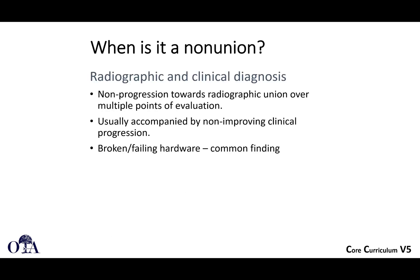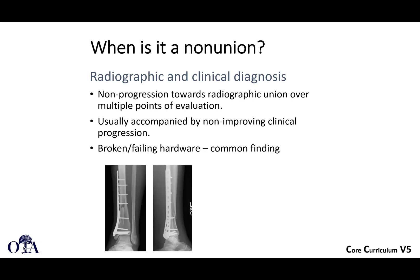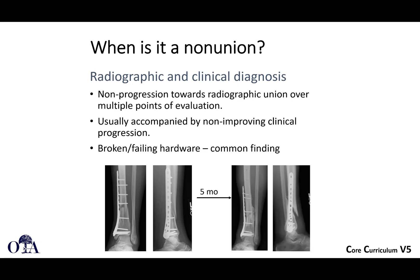When is it a non-union? It's a radiographic and clinical diagnosis — non-progression towards radiographic union over multiple points of evaluation, usually accompanied by non-improving clinical progression where the patient continues to have pain. At some point you may see broken or failing hardware because it mechanically has lost the race to bone healing. Here's an example of a distal tibia fracture treated with open reduction internal fixation: after five months you can see a persistent fracture line, some loss of fixation, and you can presume non-union.